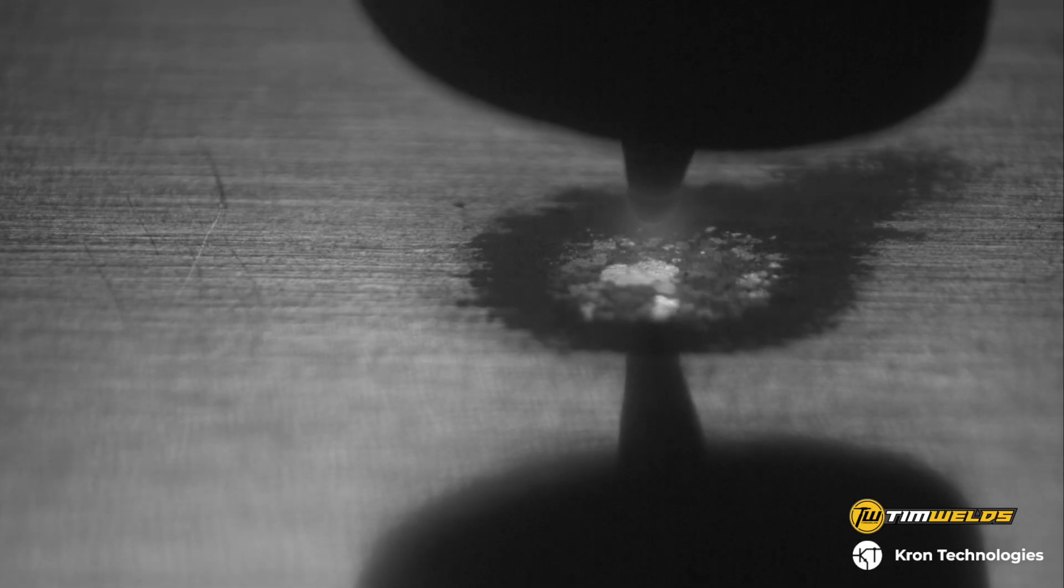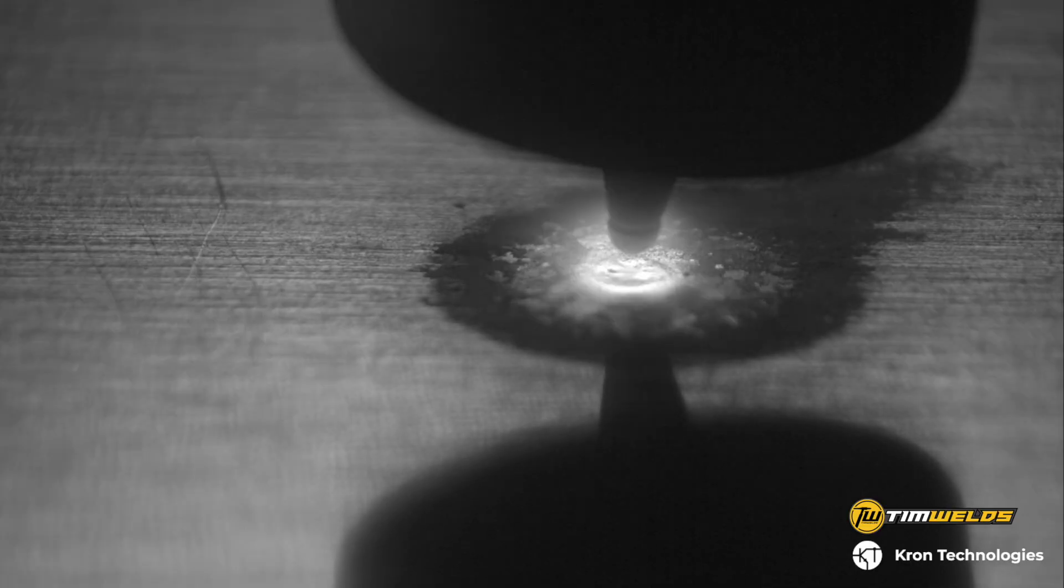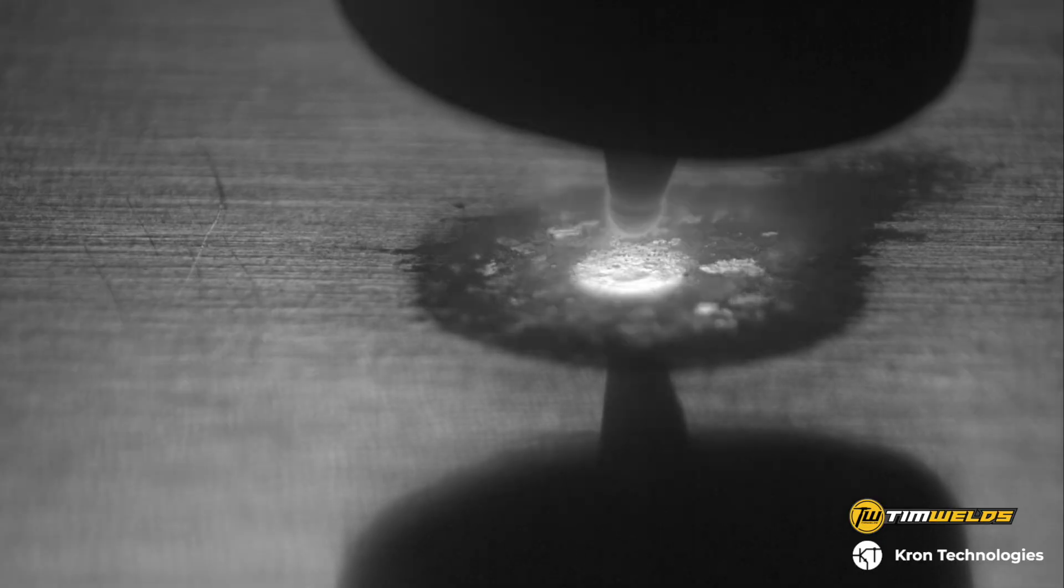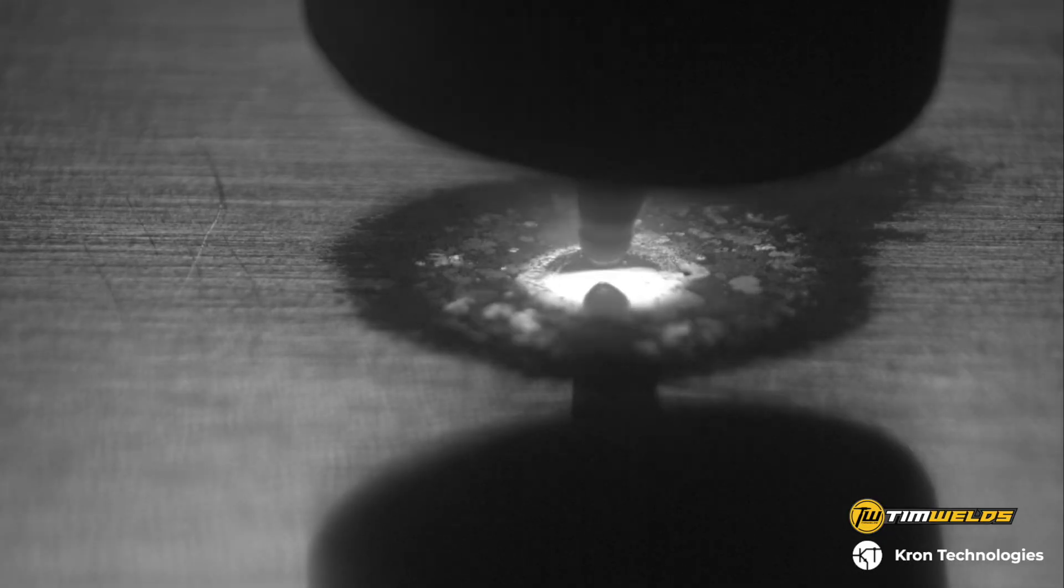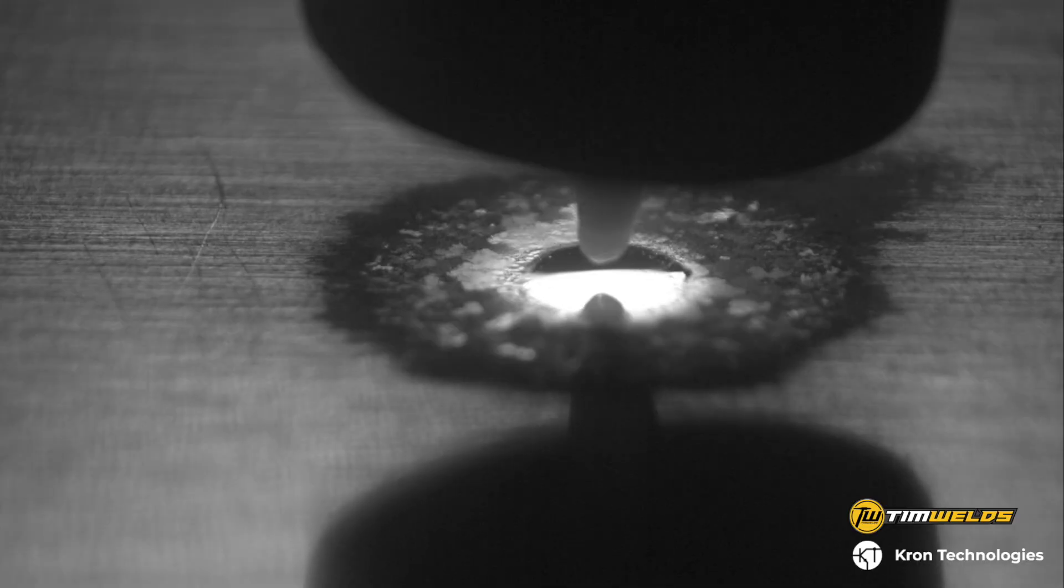Each time it switches to that positive side, so the tungsten electrode is positive, it breaks off a little bit more and now you can see a puddle start to form in the center. That puddle will grow and even as it grows, the etching continues out around the weld.